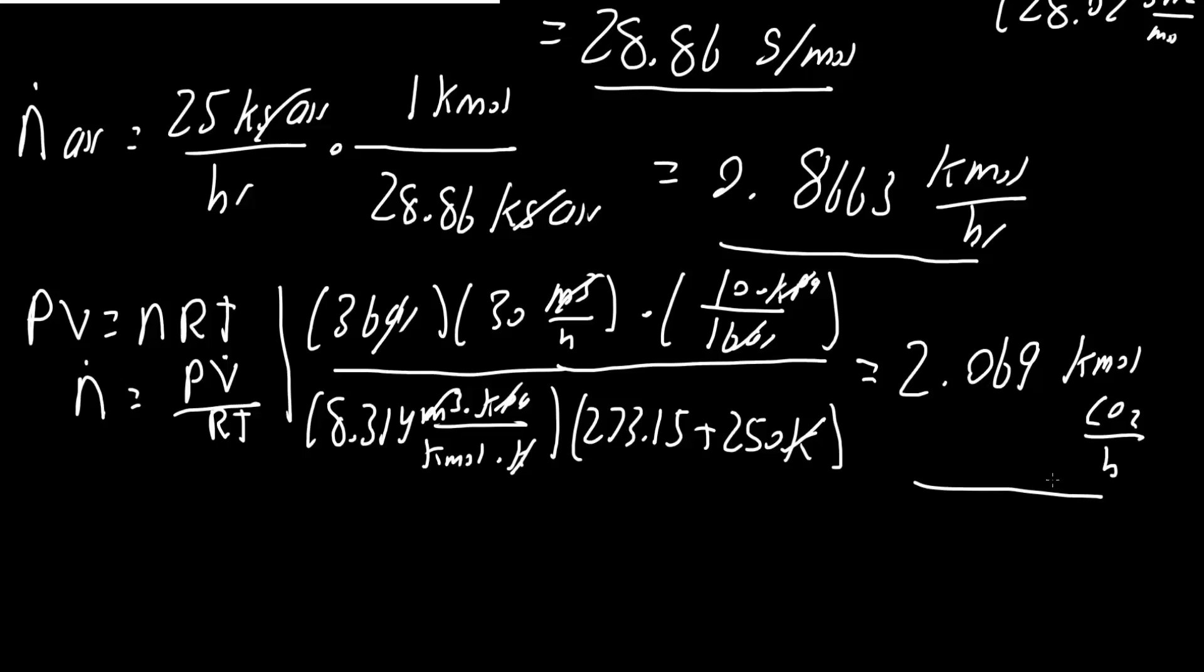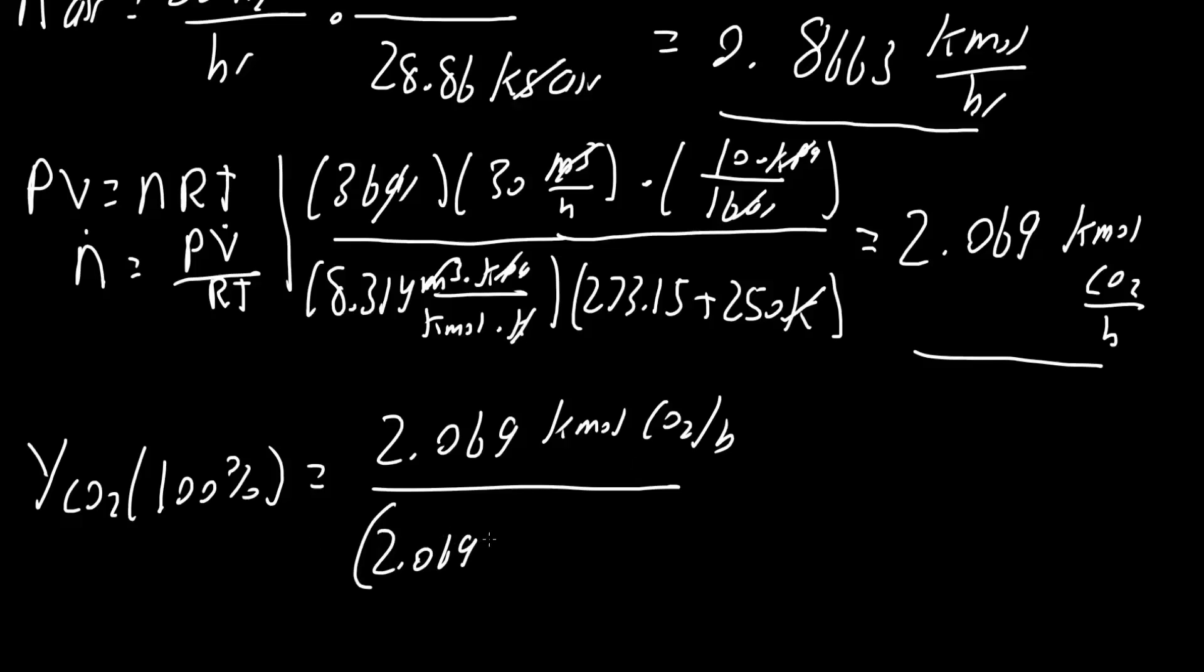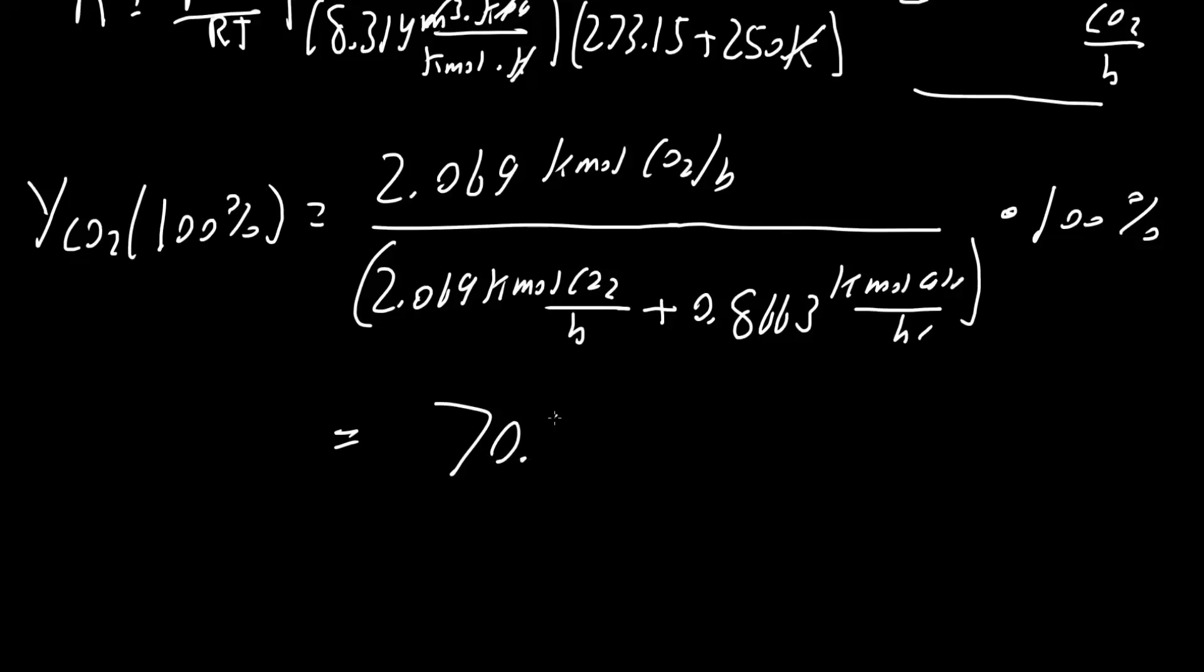Now we're very close to getting the final answer, the percent. We want to know the mole percent of CO2. So Y CO2 in percent is going to equal the component for CO2, which is 2.069 kilomoles of CO2 per hour, divided by air and CO2. So 2.069 kilomoles of CO2 per hour plus the component of air, which was 0.8663 kilomoles of air per hour, close parentheses, times 100%. Using a calculator, we would get 70.49% as our final answer, and that's all we need to do for this problem.